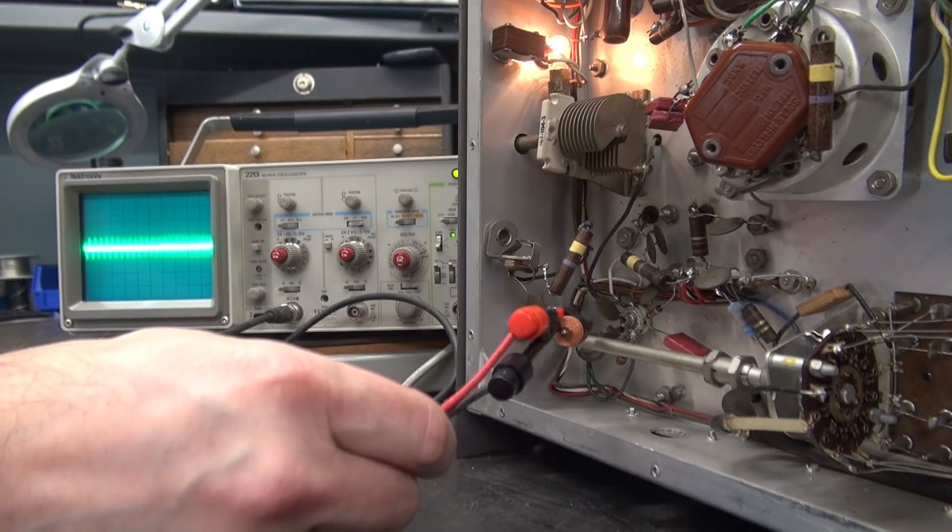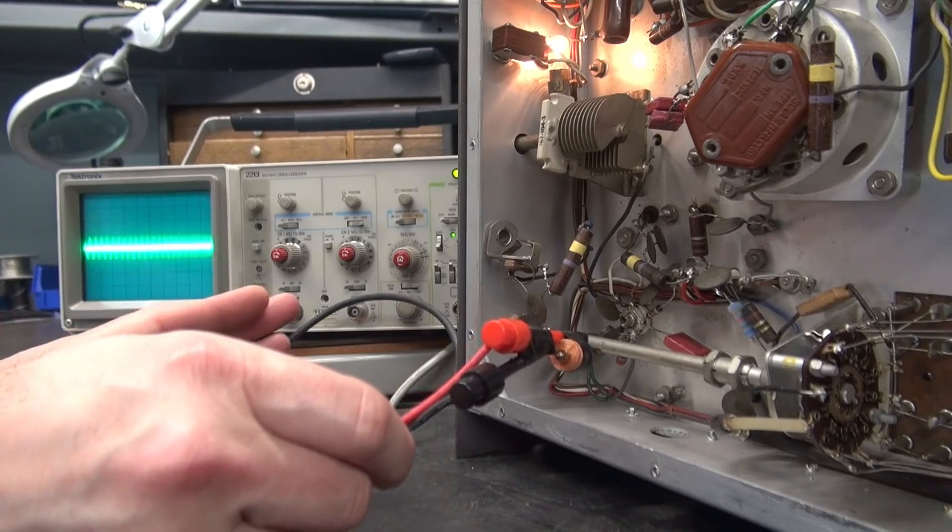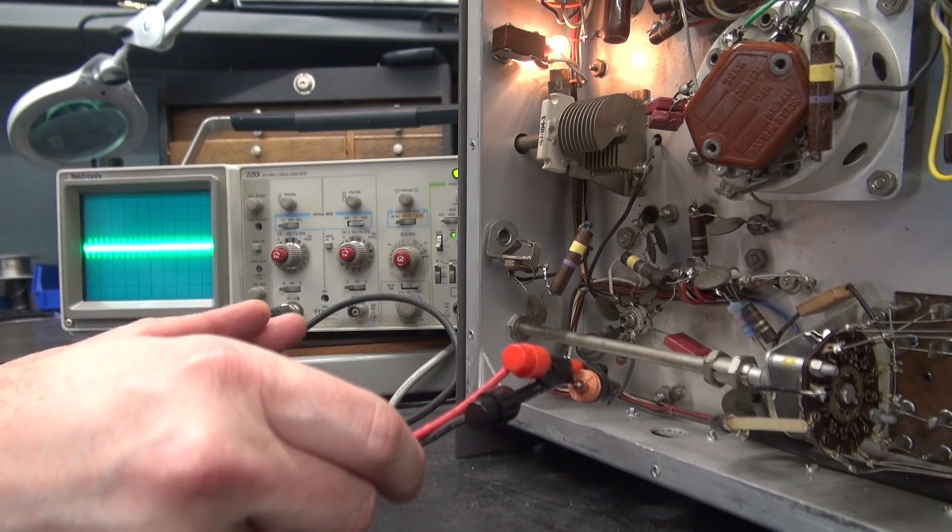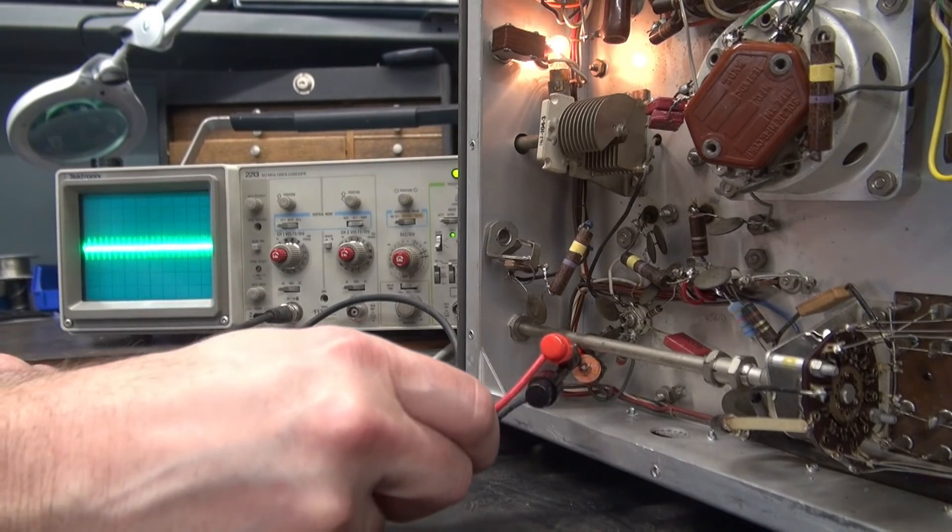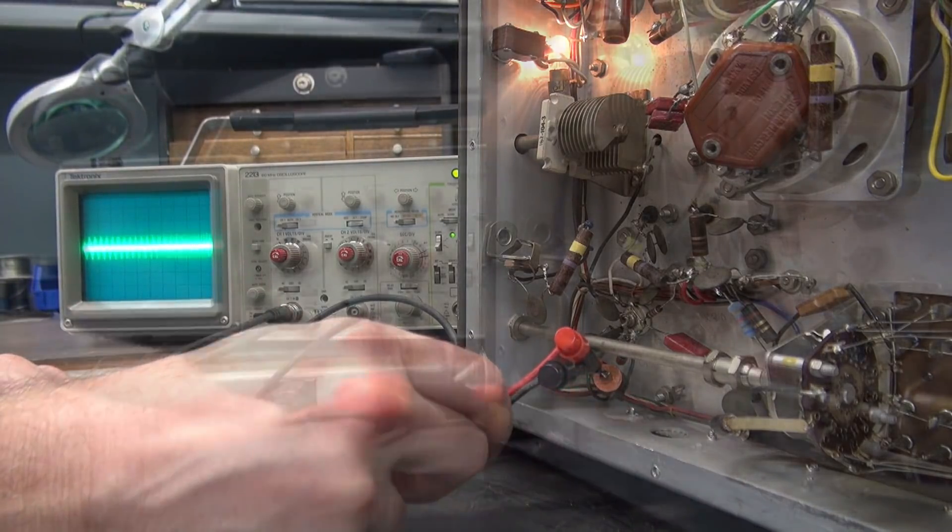And of course, that noise will jump right on the VFO signal. And that's why we're seeing it when we spot and then it's amplified when we transmit. Okay?